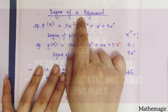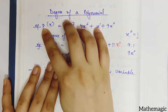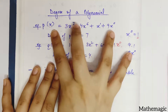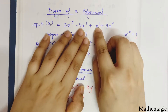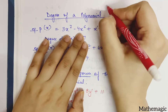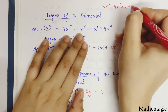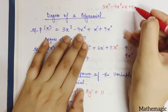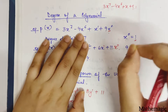We will learn how to find the degree of a polynomial. Say P(x) is a polynomial, where P is the name of the polynomial and x is the variable. Our polynomial is 3x to the power 7 minus 4x to the power 6 plus x plus 9. I have written x to the power 1 and x to the power 0 only for understanding. Any variable raised to the power 0 equals 1, so 9 into 1 is 9.